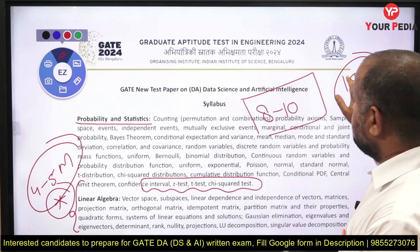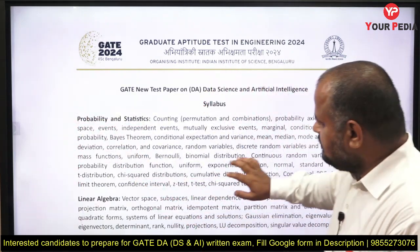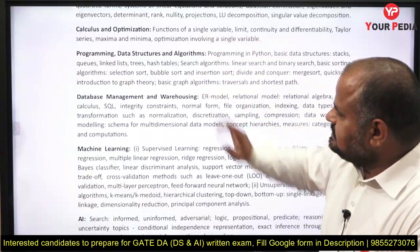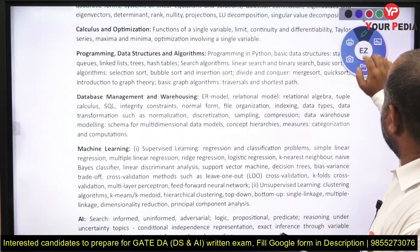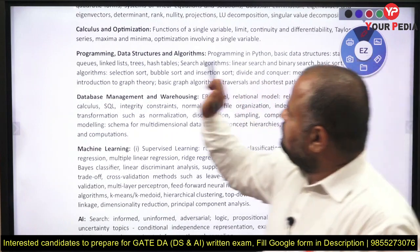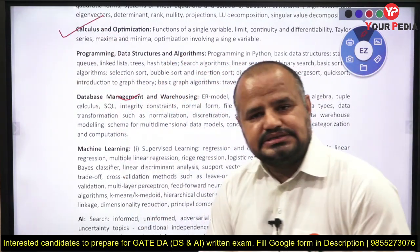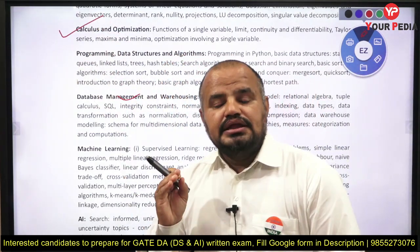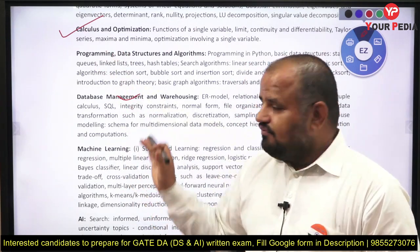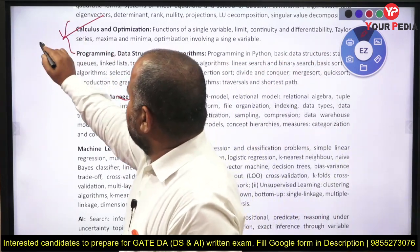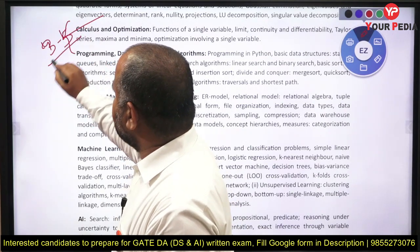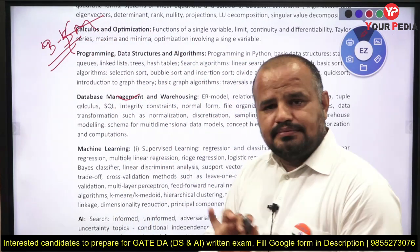Moving towards the next subject — calculus and optimization. This part is present in almost every engineering branch, and we may expect around 3 to 5 marks from this topic.